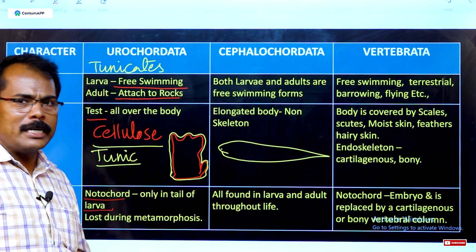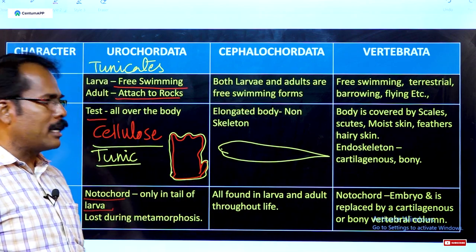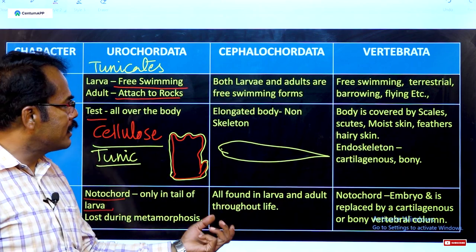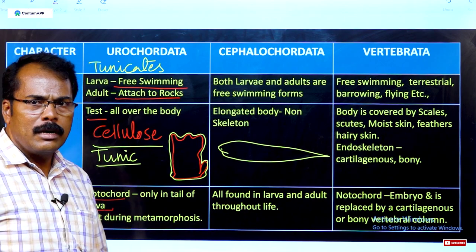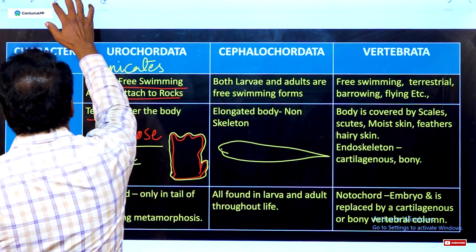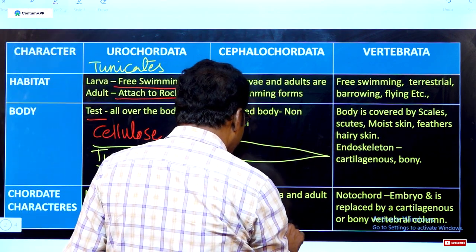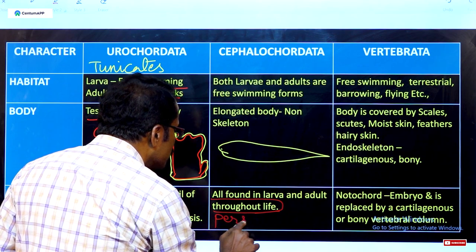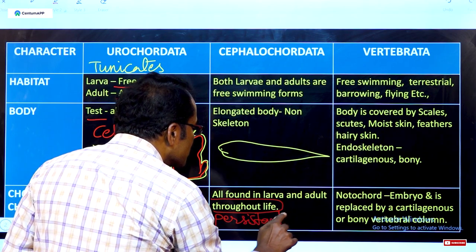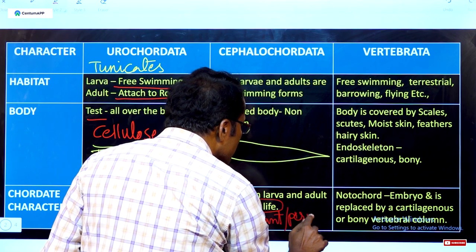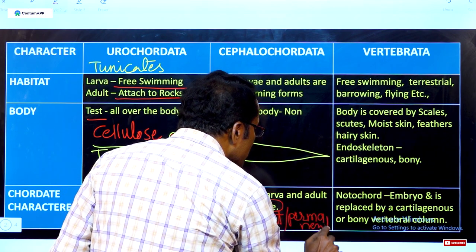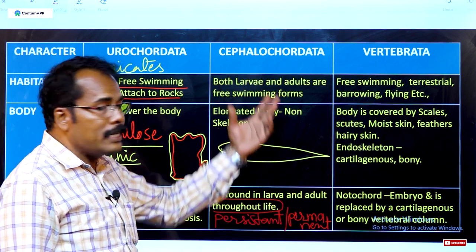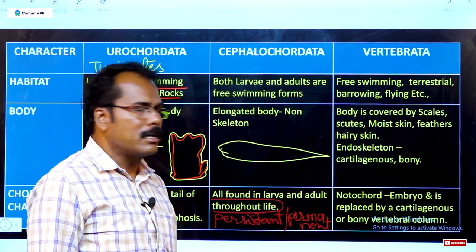In Cephalochordata, the chordate characters are found in both larvae and adults throughout their entire life — they are persistent or permanent. This means all chordate characters are present throughout the life span in both larval and adult stages.